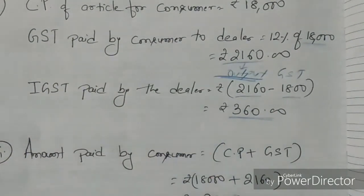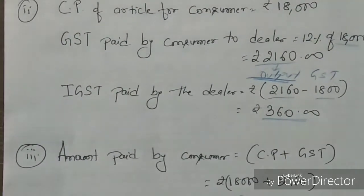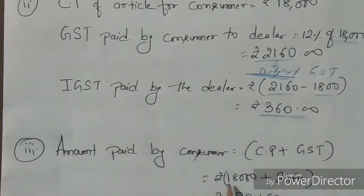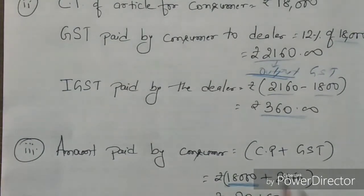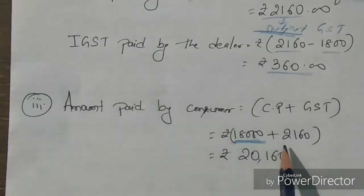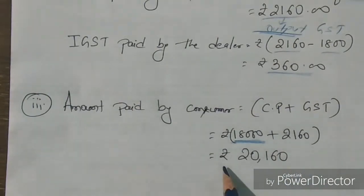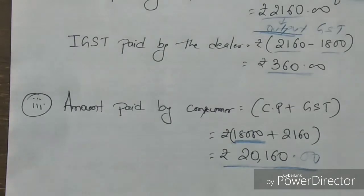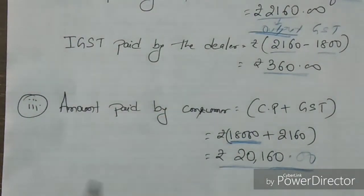For the third part — the amount which the consumer will pay — the consumer pays the cost price plus GST. The cost price of the article for the consumer is 18,000, and the GST is 2,160. So the total amount is 18,000 plus 2,160, which equals 20,160 rupees. This is the final amount the consumer will pay to the dealer. If you have any issues, please comment and I'll reply.